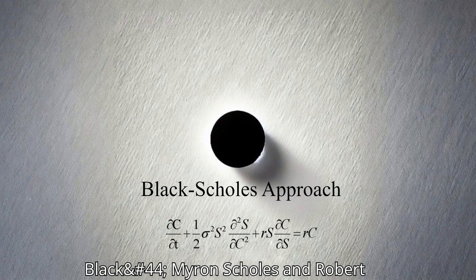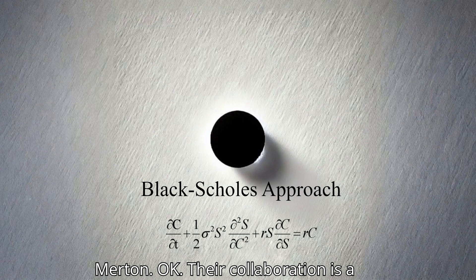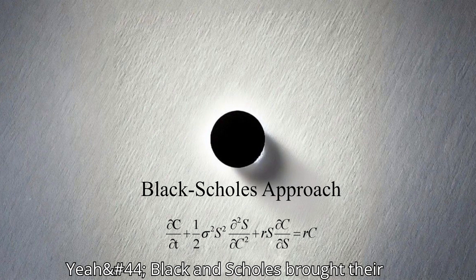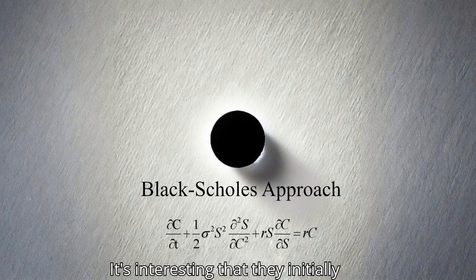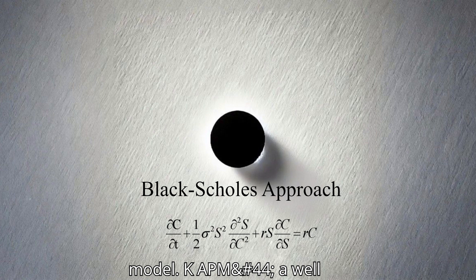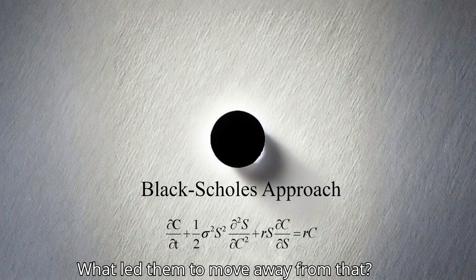Enter Fisher Black, Myron Scholes, and Robert Merton. Their collaboration is a testament to how innovation can spark when diverse perspectives converge. Black and Scholes brought their finance expertise, while Merton contributed his academic rigor. It's interesting that they initially started with the capital asset pricing model, CAPM, a well-established theory at the time. What led them to move away from that?